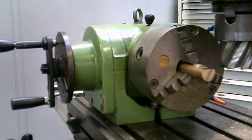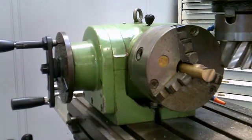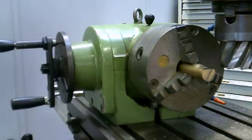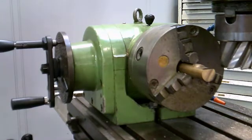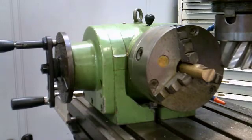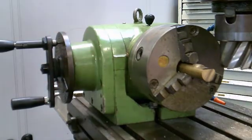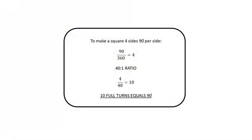Most dividing heads have a ratio of 40 to 1, meaning that you need to turn the crank handle 40 times in order to get one complete revolution of the chuck. As we're making a square we know each face needs to be at 90 degrees. So 360 divided by 90 gives us 4. If we then take our four sides and divide them into the ratio of 40 to 1, 4 over 40 gives us 10. So what that tells us is we need to make 10 full rotations of the handle to give us 90 degrees movement on the chuck.